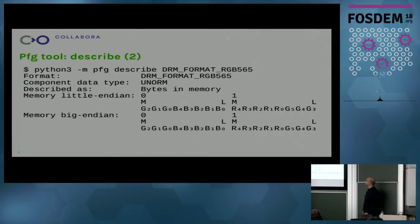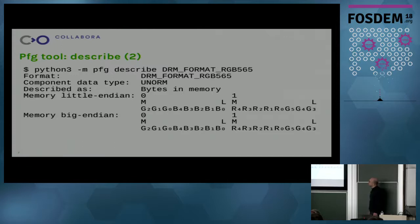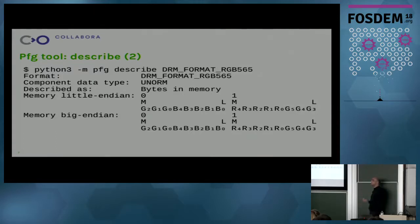Moving on to an example of a format described as bytes in memory: we don't get the native type description, but we still get the little-endian and big-endian description. In this case the descriptions are the same, but in some cases they may differ. That's usually the case when we have pixel formats where each component is multiple bytes — the components in memory are in the same order, for example RGBA, but the two bytes of each component may be flipped depending on system endianness. And that is described.